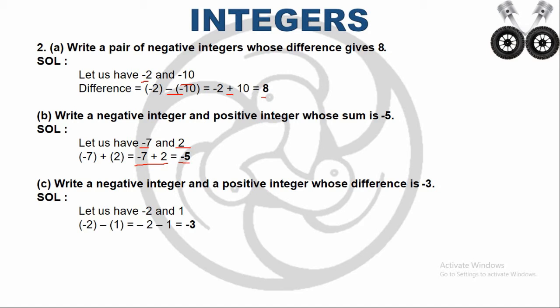Sub-question C: write a negative integer and a positive integer whose difference is -3. I take -2 as the negative integer and 1 as the positive integer, then subtract: minus 2 minus 1. These 2 integers have the same sign, so I add: minus 2 minus 1 equals -3.